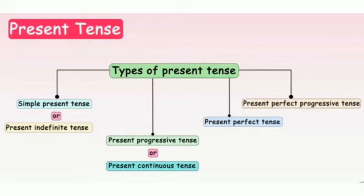We have learned past tense, present tense, and future tense. Now we will start with present tense and its types. There are four types of present tense: simple present tense, present progressive tense, present perfect tense, and present perfect progressive tense. We will be covering these in the next lessons.